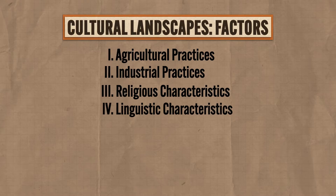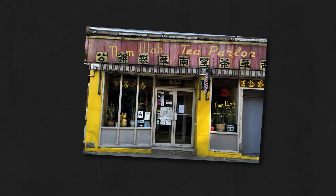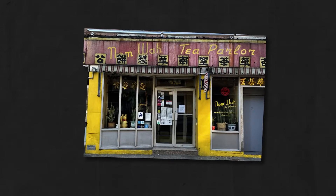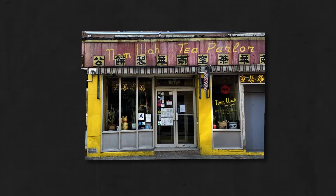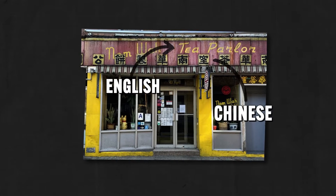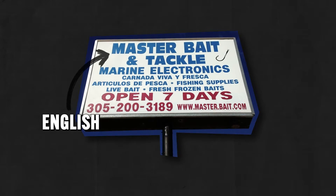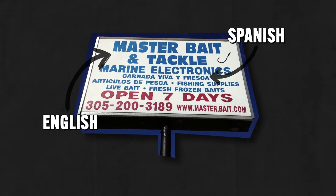Fourth, linguistic characteristics are part of the cultural landscape. Consider the signage in various places — the language on the signs gives you a sense of the people who are there. For example, in New York City's various Chinatowns, restaurants and stores have signs written in both English and Chinese. Or in Miami, many signs are written in English and Spanish.